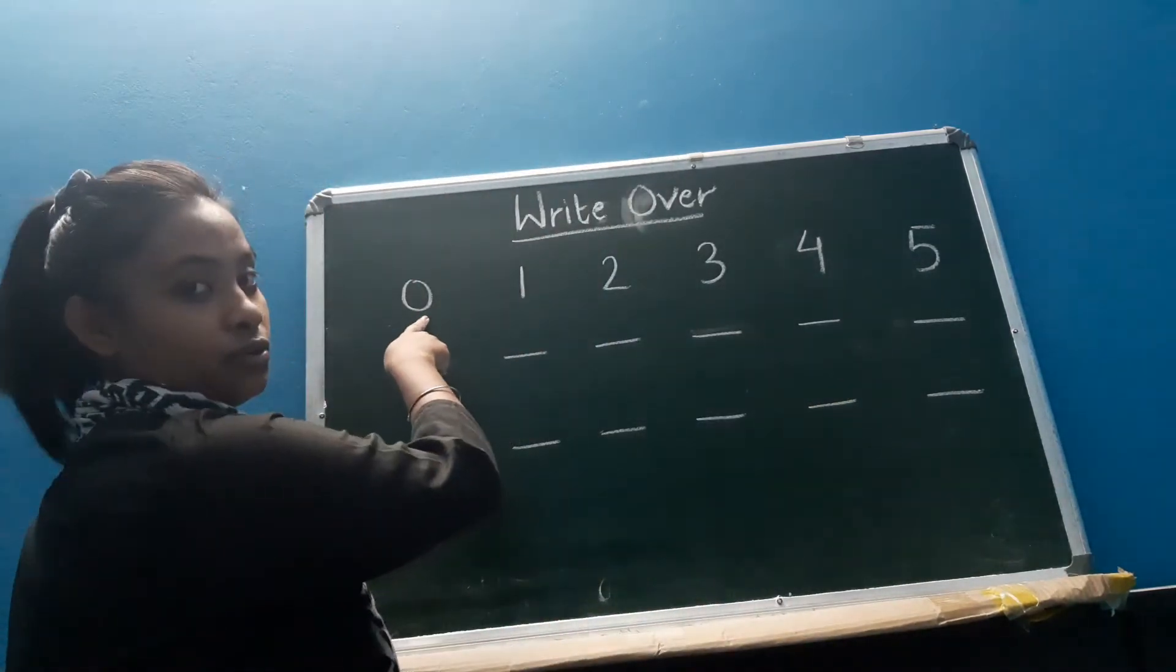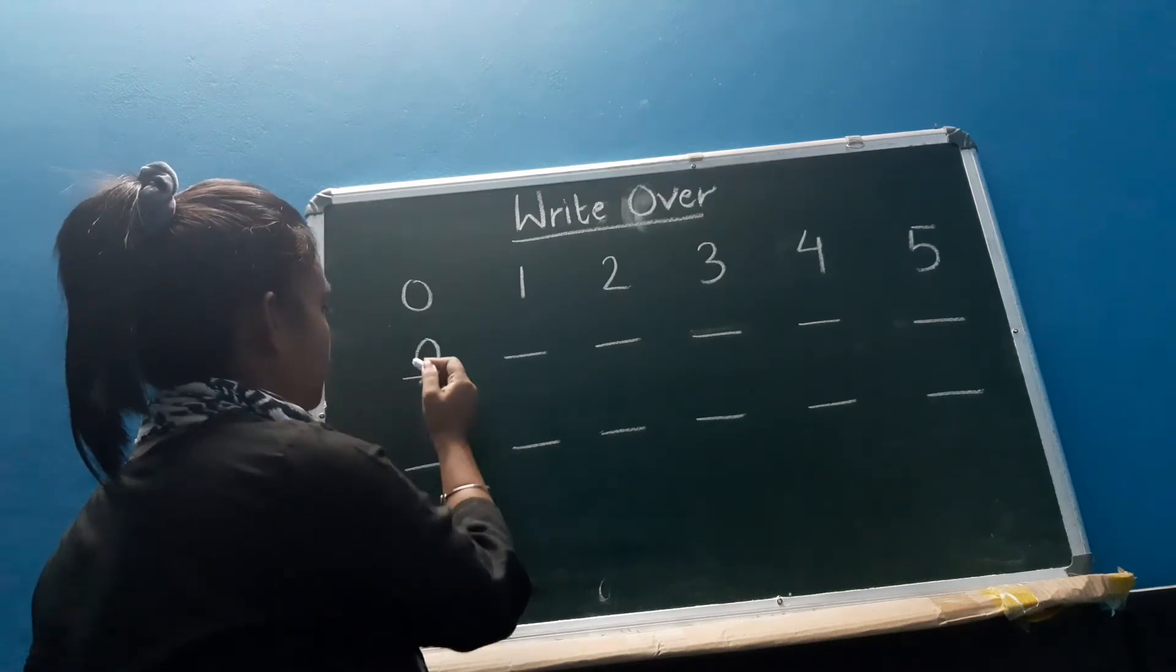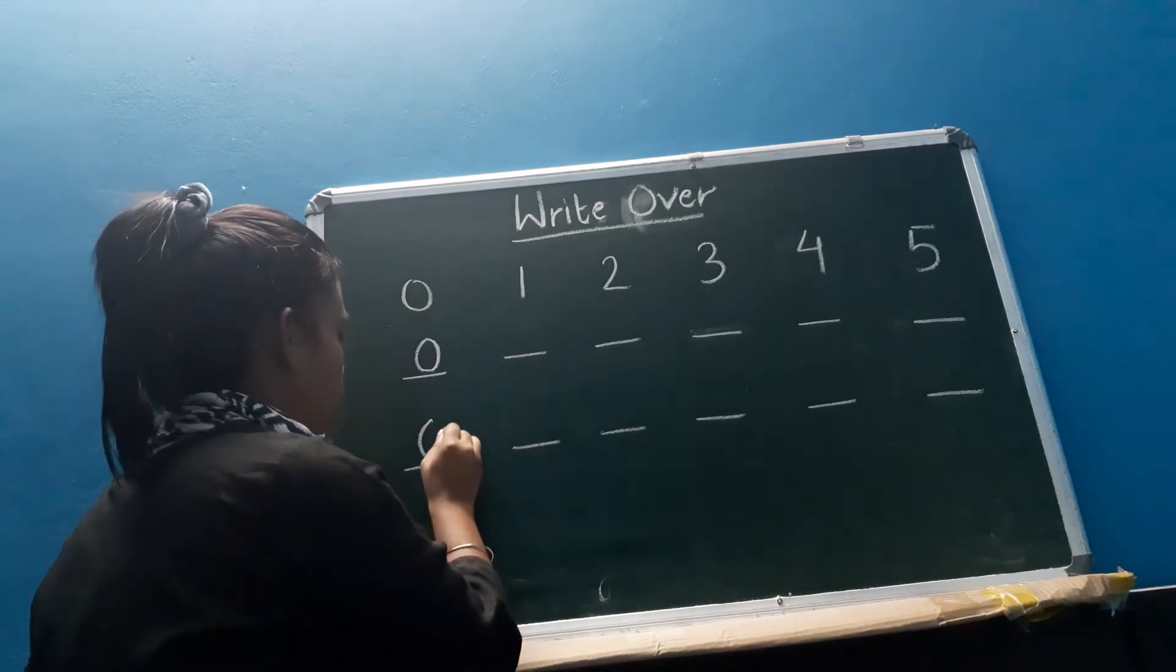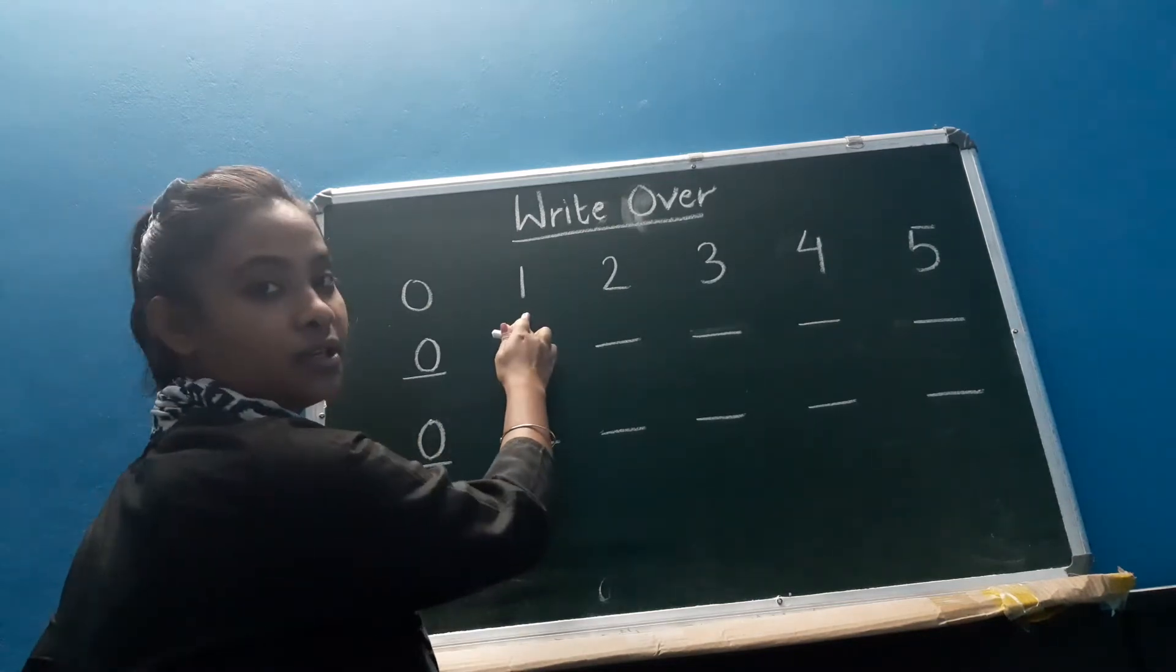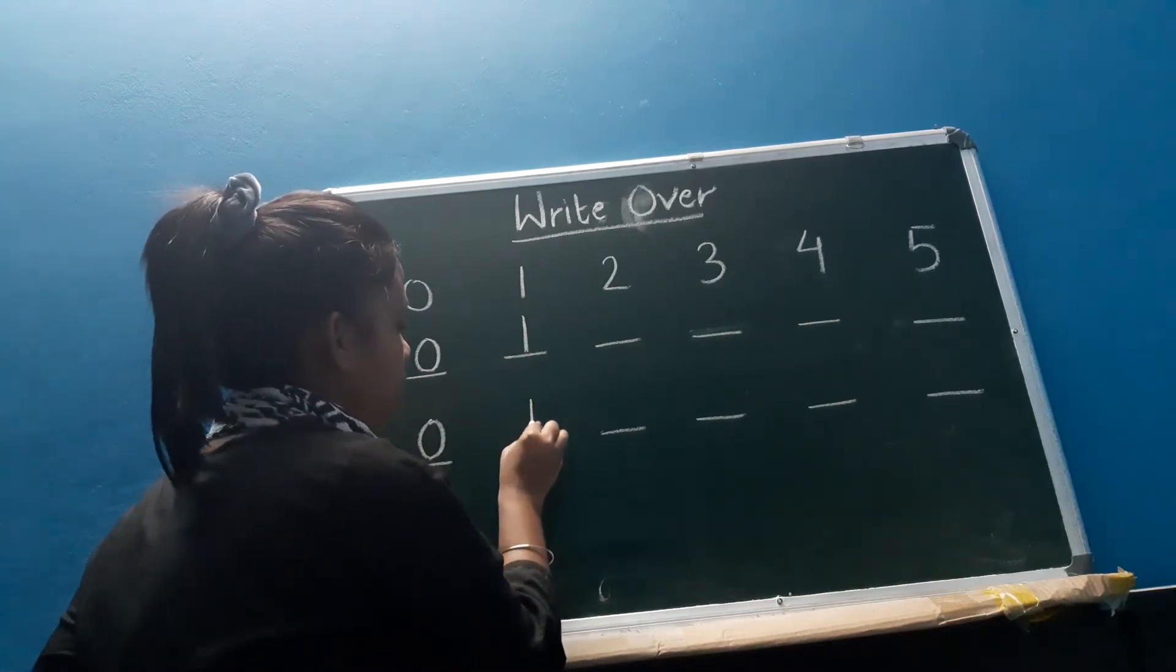First is 0. Okay, so first you have to write here 0 and down 0. And next number is number 1. Okay, so you have to write here 1, 1.